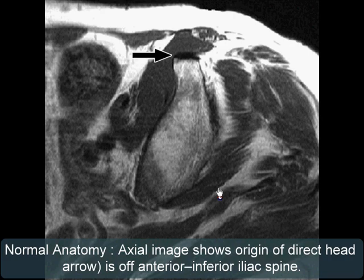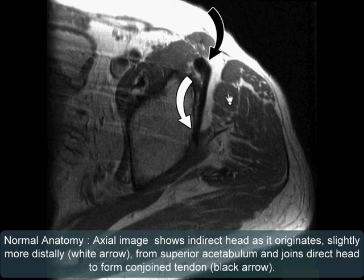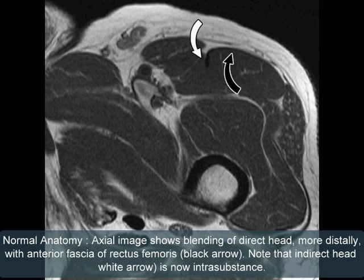Axial T1 weighted image with normal anatomy showing the origin of the direct head at the anterior inferior iliac spine. This axial image shows normal anatomy with the indirect head originating from the superior acetabulum and joining the direct head to form the conjoined tendon. More distally, the axial image shows blending of the rectus femoris with the indirect head now intrasubstance.